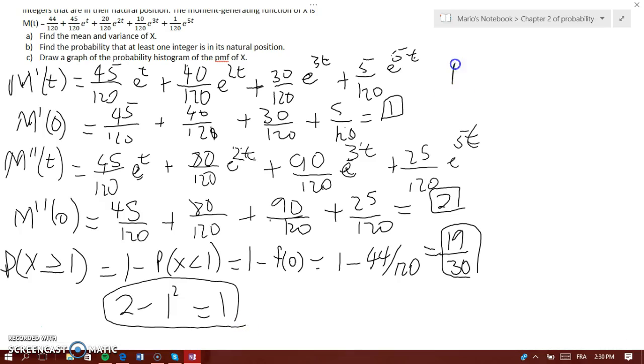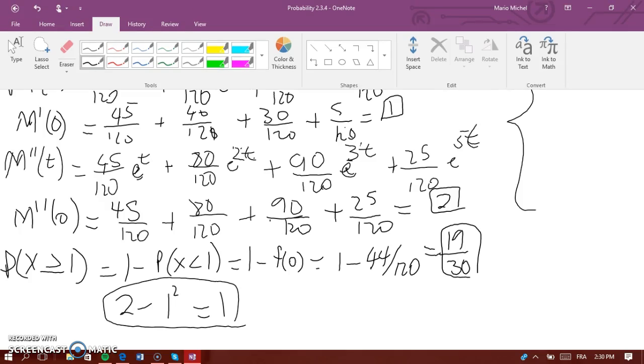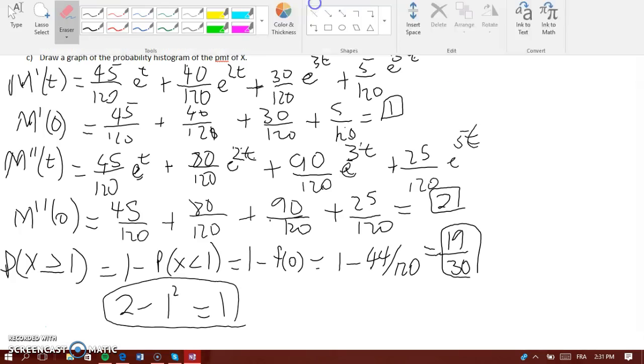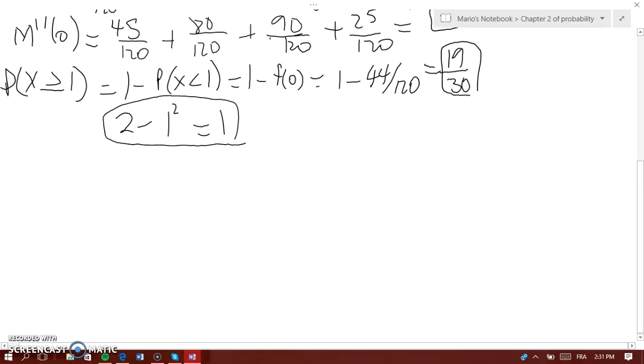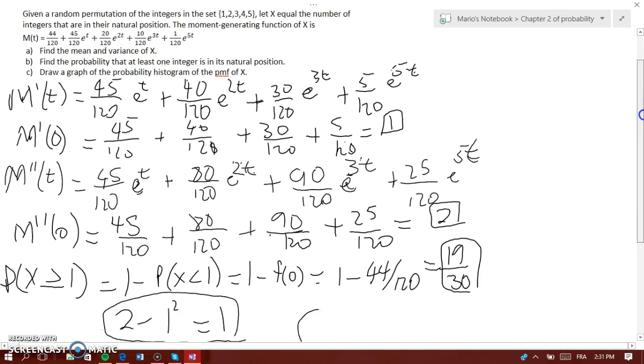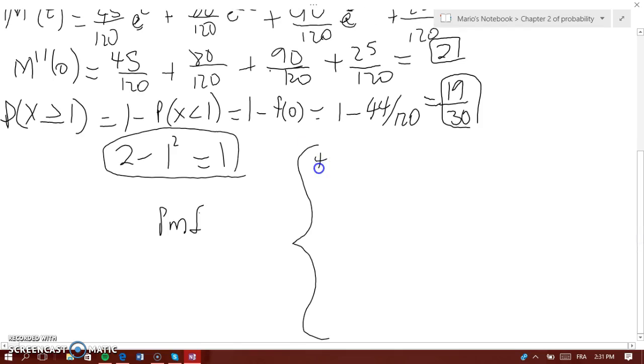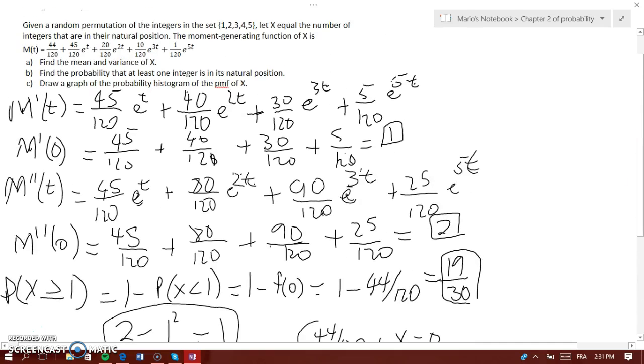Now let's write the PMF. Remember, we have 5 values here, so it's going to be a big one. What is the PMF when X is equal to 0? It's 44 over 120. Because when X equals 0, you have 44 over 120 times e to the power of 0t. We know that e to the power of 0 is 1, so that would equal 44 over 120.